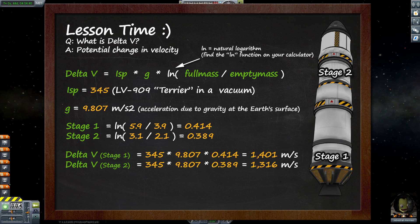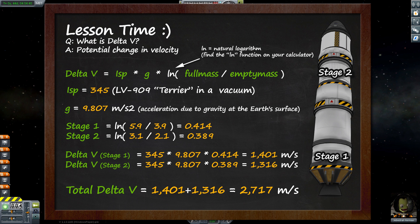To calculate our delta V, we multiply these numbers together: 345 by 9.807 by 0.414, which gives us 1,401 metres per second for stage 1. The delta V for stage 2 is simply 345 by 9.807 by 0.389, and this gives us 1,316 metres per second. Of course the total delta V is simply these two numbers added together, so 1,401 plus 1,316 gives us 2,717 metres per second total.